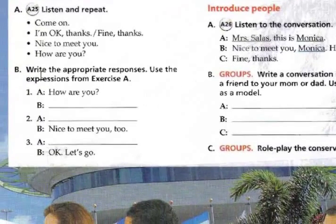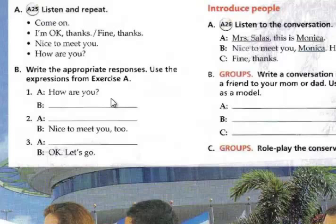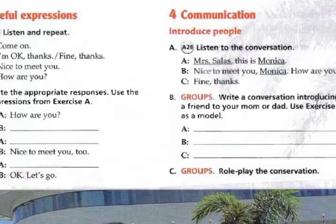En los ejercicios de abajo, en el primero dice: write the appropriate responses, use the expressions for exercise A. Escribe una respuesta apropiada usando las expresiones de aquí arriba. Por ejemplo, how are you? — fine, thanks, o I'm okay, thanks. Si dice nice to meet you — nice to meet you, too. En la tercera conversación, si dice let's go — se supone que dijo come on. Entonces aquí van a hacer una conversación introduciendo a otra persona, cambiando los nombres y hacer otra conversación.